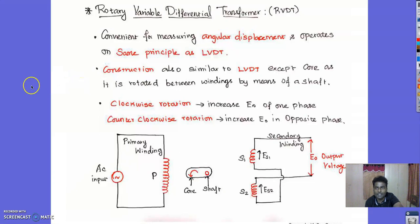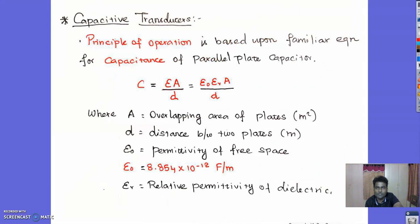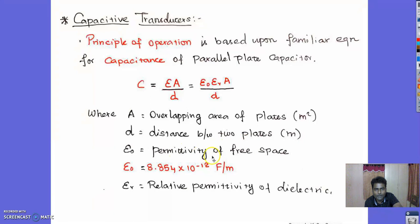This covers the types of inductive transducers. Next is the capacitive transducer, whose principle of operation is based on the familiar equation for capacitance of a parallel plate capacitor: C = εA/d = ε₀ · εᵣ · A / d, where A is the overlapping area of the plates, d is the distance between the two plates, ε₀ is the permittivity of free space (8.854 × 10⁻¹² F/m), and εᵣ is the relative permittivity of the dielectric. We will continue about the types of capacitive transducer in the next lecture.